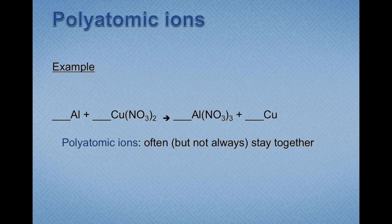I'm going to show you how to balance equations with polyatomic ions. Remember, polyatomic ions are molecules that have a charge. So NO3, or nitrate, is a polyatomic ion. You can find these in your chemistry tables.